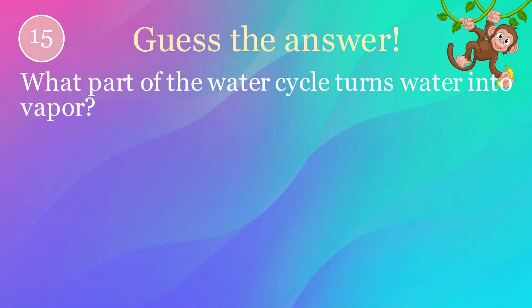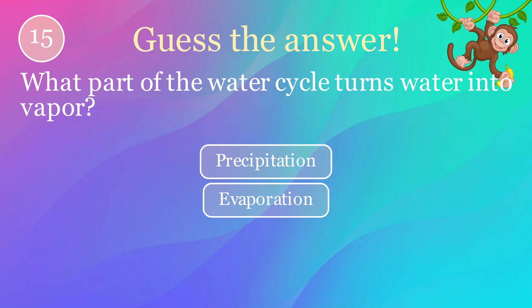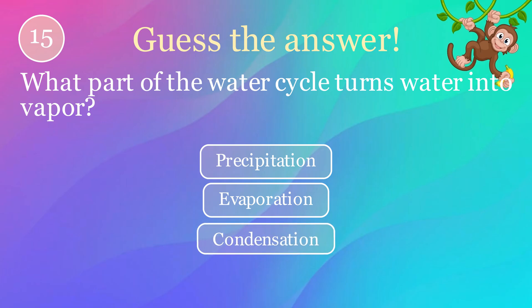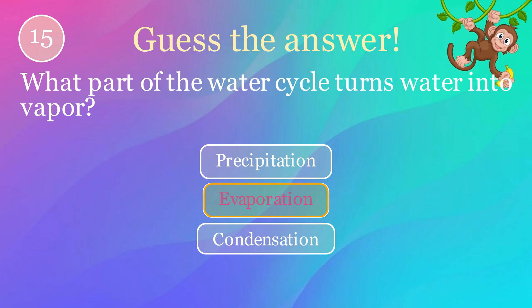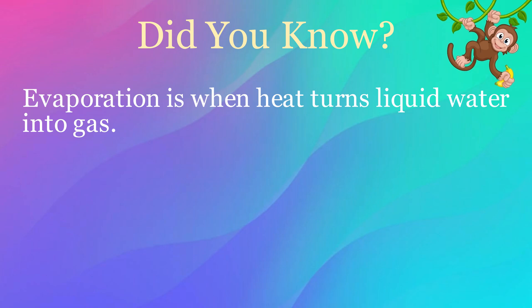What part of the water cycle turns water into vapor? Options: precipitation, evaporation, condensation. The correct answer is evaporation. Here's an interesting fact: evaporation is when heat turns liquid water into gas.